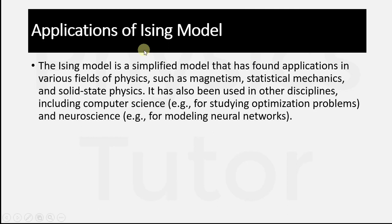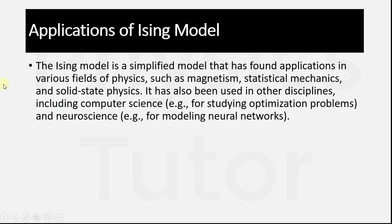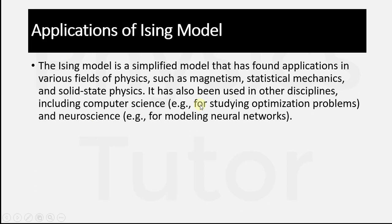Finally, the applications of the Ising Model: it is a simplified model that has found applications in various fields of physics, such as magnetism of ferromagnetic materials where particles are properly arranged and spin motion is present. In statistical mechanics, we take the probability of spin motion. In solid state physics, we also study the Ising Model. It has also been applied in computer science for studying optimization problems and in neuroscience for modeling neural networks.